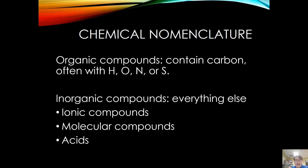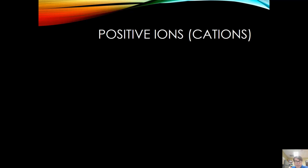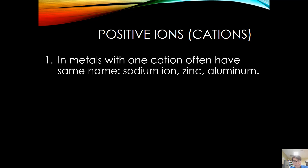Ionic compounds, molecular compounds, and acids are examples of inorganic compounds. Now, how do we name positive ions, also called cations? When naming cations that involve a metal like sodium, zinc, or aluminum, the ion simply takes the name of the element — a sodium ion, zinc ion, or aluminum ion. Cations are usually named first, and their symbol is usually put first in a compound.